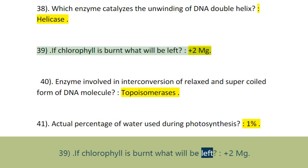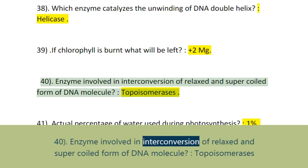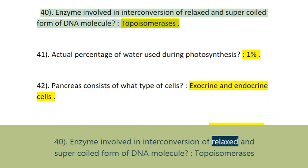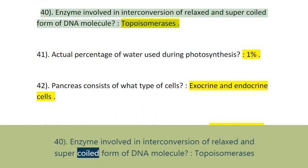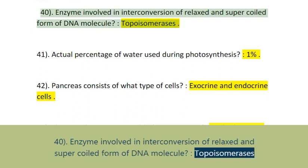Question 39: If chlorophyll is burned, what will be left? Mg2+ (magnesium). Question 40: The enzyme involved in interconversion of relaxed and supercoiled forms of a DNA molecule is Topoisomerase.